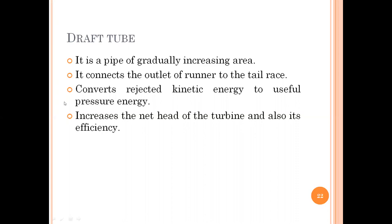A draft tube is basically a pipe of gradually increasing area. Section one is attached to your runner casing, and section two is at your tail race — the area is increasing. It connects the outlet of the runner to the tail race, immersed inside the tail race. The tail race is the level of water downstream of a dam, and the draft tube converts rejected kinetic energy to useful pressure energy.